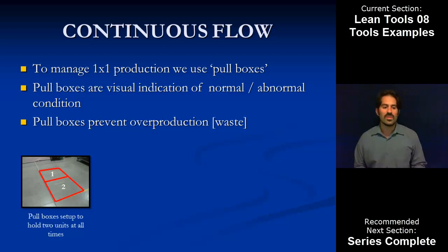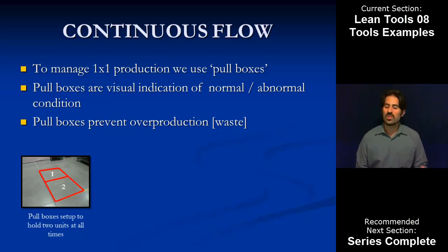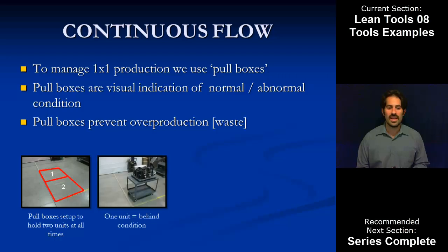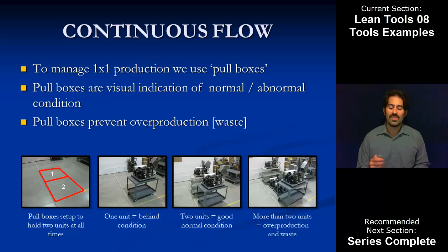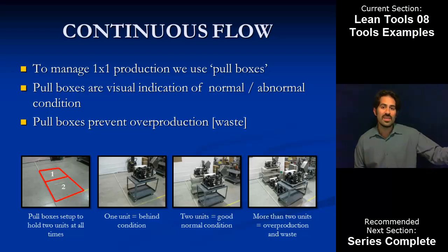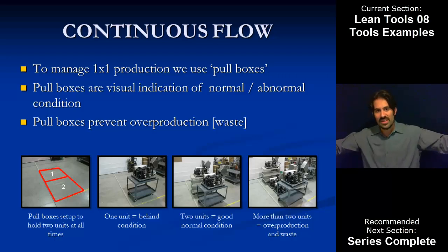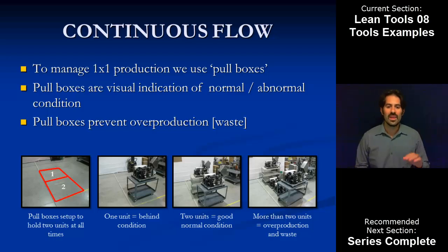Just as a quick review: in this example, we set up two pull boxes to hold two units at all times. If one unit is there, we know we're behind. If two units are there, we know we're in good condition. If more than two units are there, we know we're overproducing — there's waste. Management can immediately idle the line upstream until we fix the bottleneck downstream. That's the thinking with this.